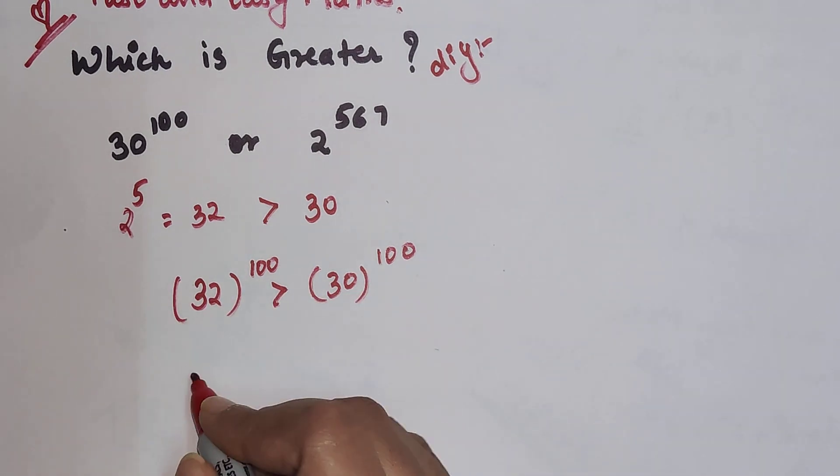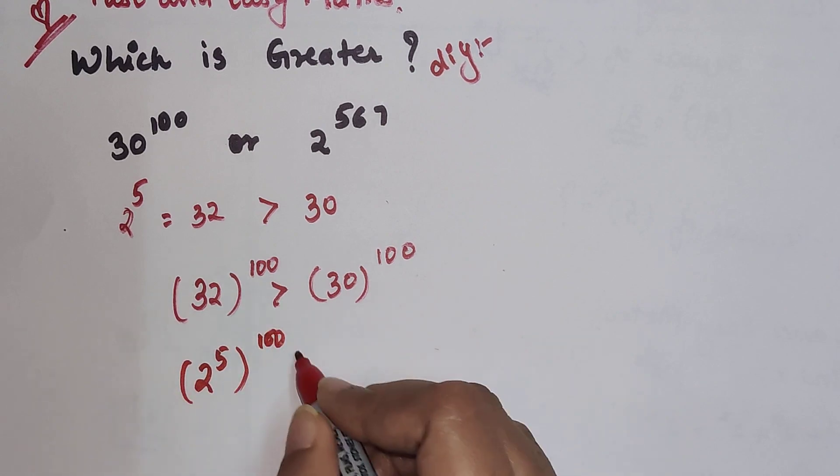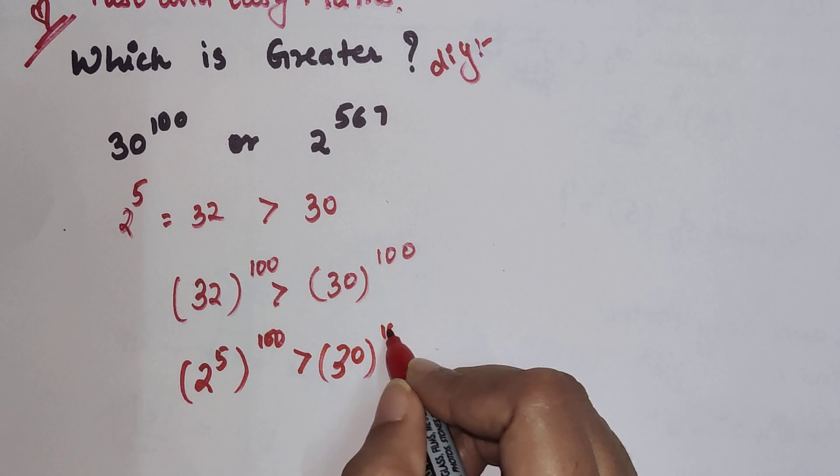Now we have this as, we can write this in terms of 2. So this is 2 raised to 5 the whole raised to 100, and this is still greater than 30 the whole raised to 100.